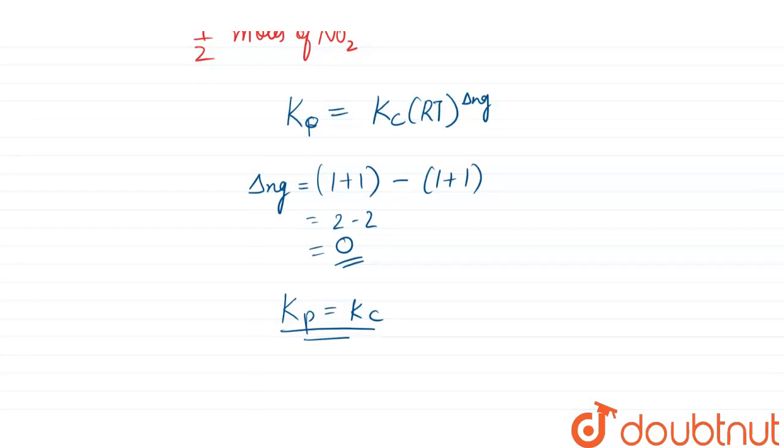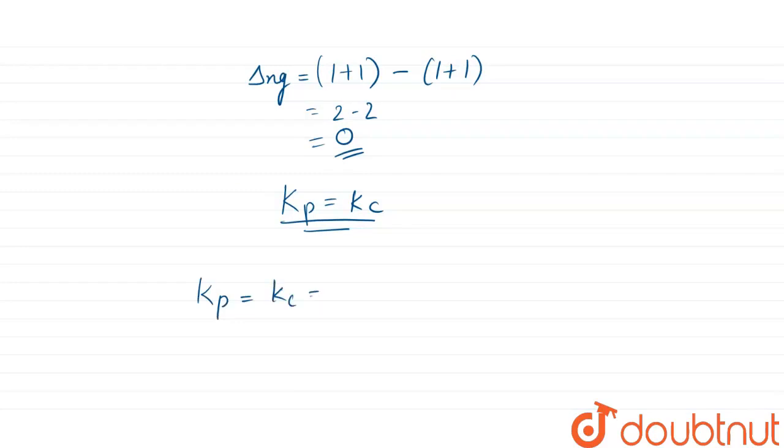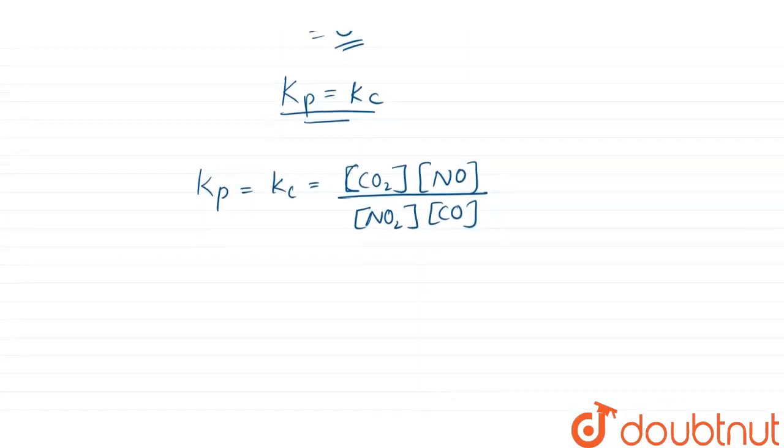Now Kc equals - or you can say Kp equals Kc, which is concentration of products CO2 and NO upon concentration of reactants NO2 and CO.